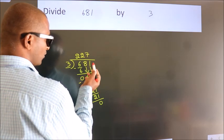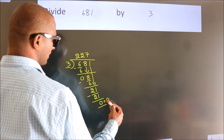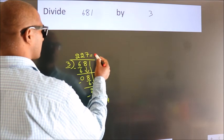After this, no more numbers to bring down. So we stop here. This is our remainder, and this is our quotient.